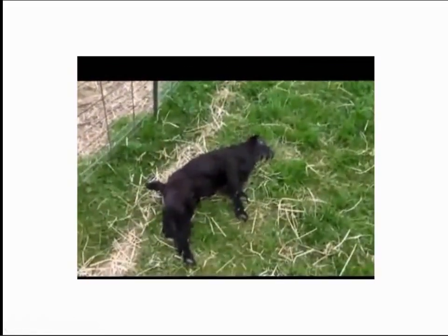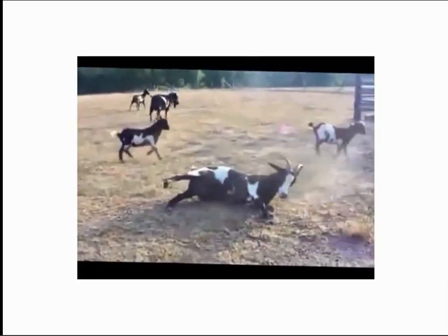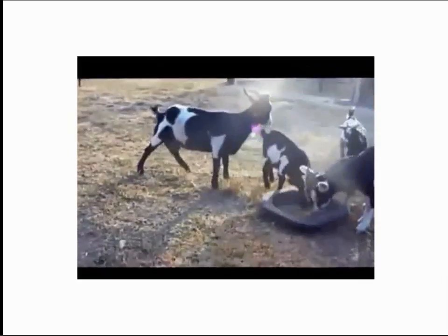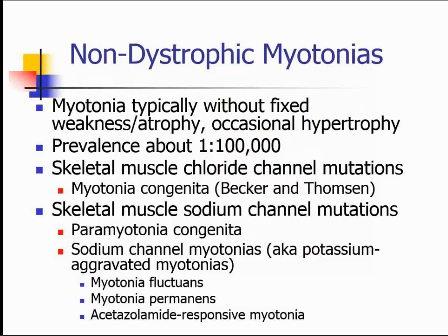This is a fainting goat. People breed these goats — they have a mutation analogous to human myotonia congenita. Human myotonia congenita is due to mutations in the chloride channel one gene, which is basically what these animals have. What they're doing is not fainting when they're startled and try to run fast to get away — they stiffen up and fall to the ground because their muscles don't work temporarily. This is the prototypical non-dystrophic myotonia, and there are others we'll talk about as well.